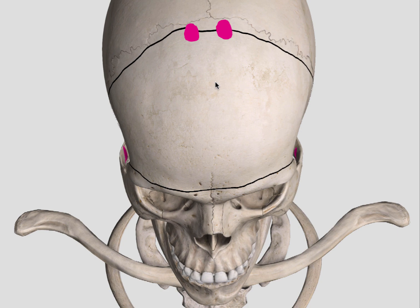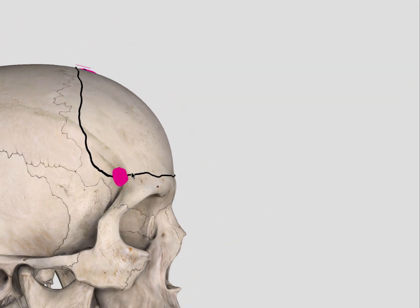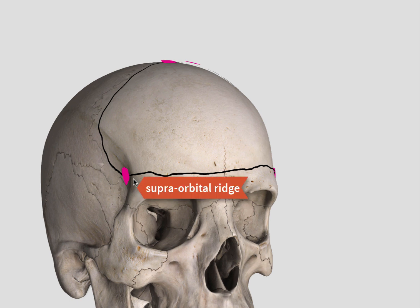I would also put a burr hole on the keyhole that is just under the most anterior aspect of the temporalis muscle, just above the lateral end of the superior orbital ridge.